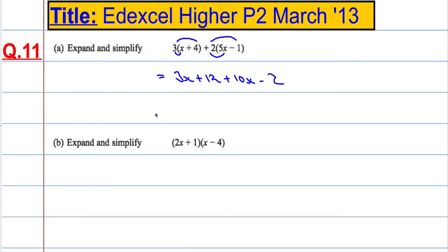So 2 times 5x and then 2 times negative 1, which is negative 2. So we've expanded there and then collect the like terms together: 3x plus 10x is 13x, 12 take away 2 is 10.